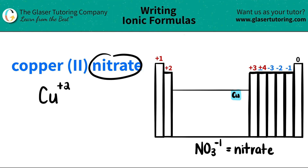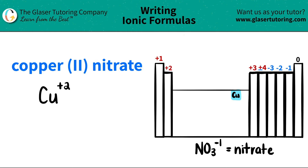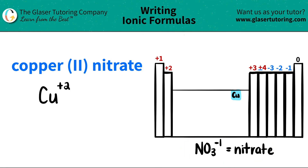I move over to nitrate. I see that it has an ATE ending, and all ATE endings are always polyatomic ions. Polyatomic ions are never found on the periodic table — you have to memorize them. For the sake of the video, I just wrote down what nitrate is, but use flashcards or do whatever you need to do to know that nitrate is NO₃ with a negative one charge.